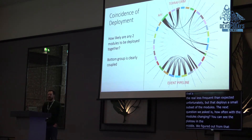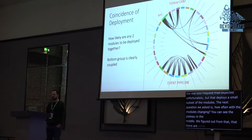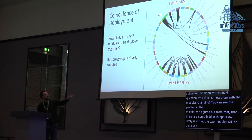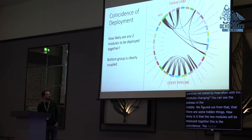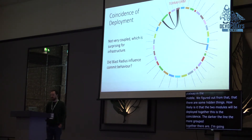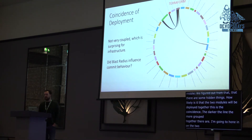Then: how likely is it that any two modules are going to be deployed together? This is the coincidence of deployment. The darker the line, the more coupled two modules are in deployment, and you can see at the bottom there's an obvious group. Honing in on our two most commonly deployed modules: Terraform has all our AWS infrastructure, and this is surprisingly not very coupled.